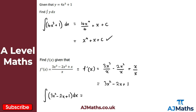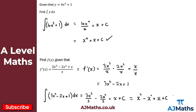We integrate 3x squared minus 2x plus 1 with respect to x, going term by term. Adding 1 to each power: 3x cubed over 3, minus 2x squared over 2, plus 1 times x. Then we add the constant of integration. Simplifying: 3 over 3 is 1 so we get x cubed; 2 over 2 is 1 so we get minus x squared; plus x plus c. That's our solution.